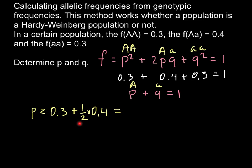0.4 multiplied by one half would be 0.2, plus 0.3 would be 0.5. So the frequency of p, or capital A, would be 0.5. We can also say this is 50%, because 1 equals 100%.